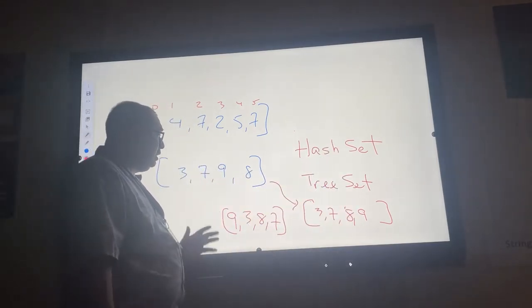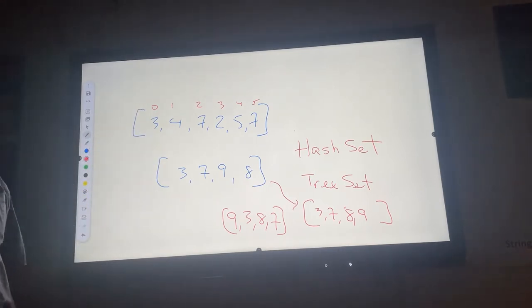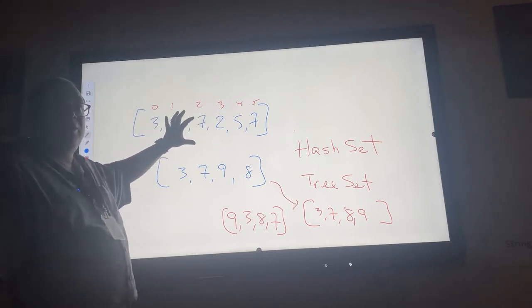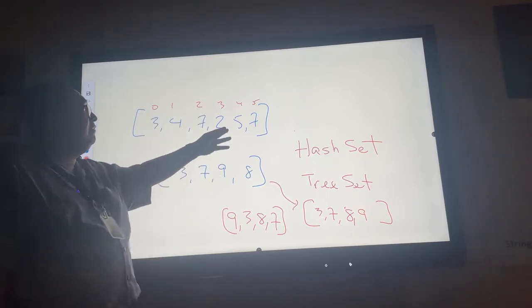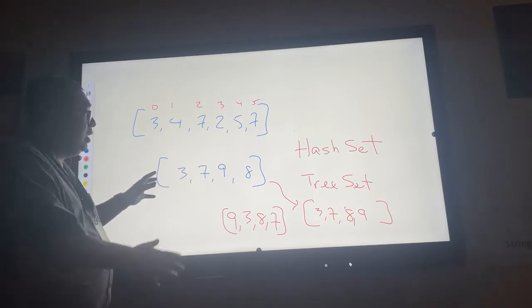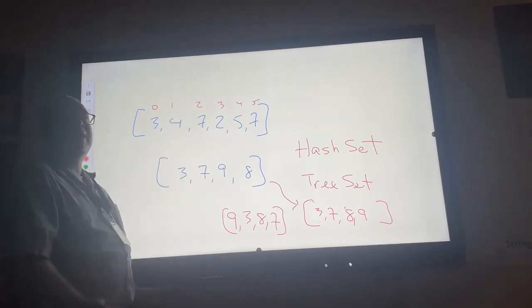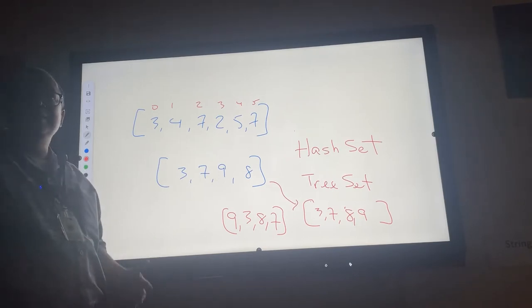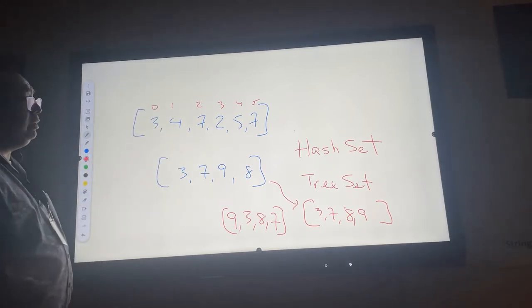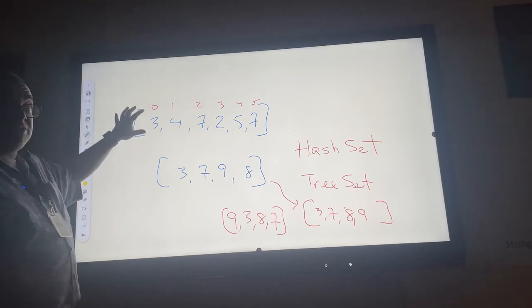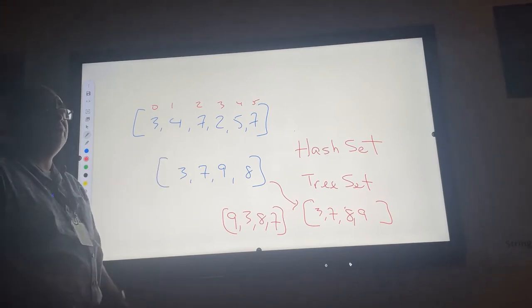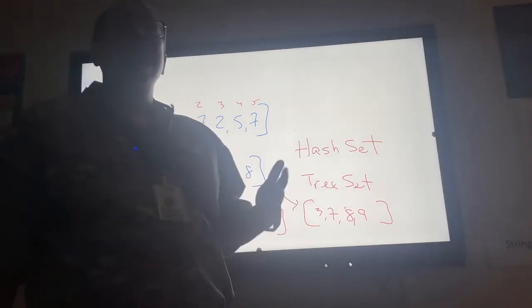With a list, items stay in a specific fixed order, so if you ask for the fourth item it always gives you the same answer. But with a set, as you add and delete elements, existing elements might shuffle around. So sets have some disadvantages over lists when it comes to ordering. However, the set has one huge advantage over the list.